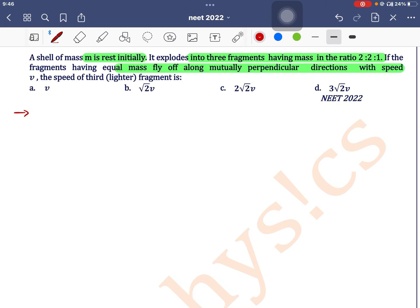Now see, it is given that we have a shell of mass m which explodes into three fragments whose ratio is 2 to 2 to 1. So I can write 2x + 2x + x = m, so 5x = m, so x = 0.2m.